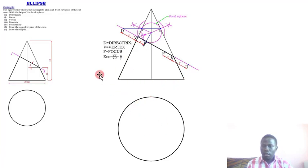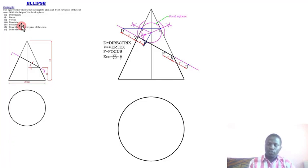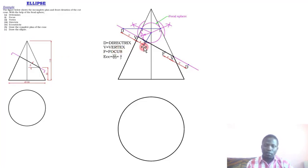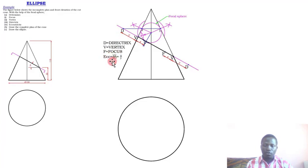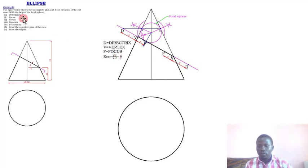You now have the directrix, vertex, focus, and the aside outlined. The remaining item is eccentricity. The eccentricity of any conic shaped figure is the ratio of the distance between the focus and vertex to the distance between the vertex and the directrix. Eccentricity equals VF divided by VD, expressed as x over y.